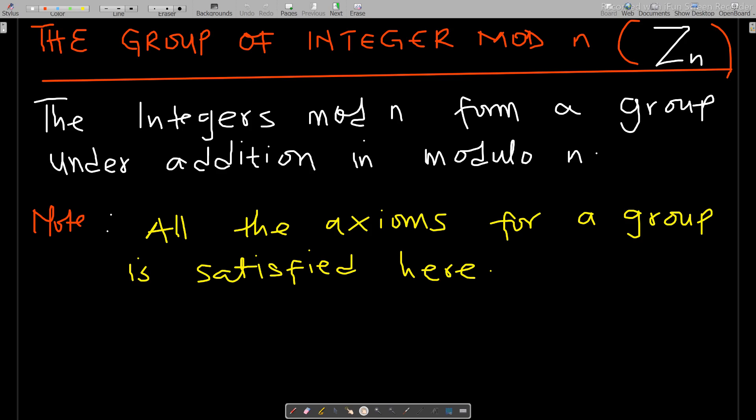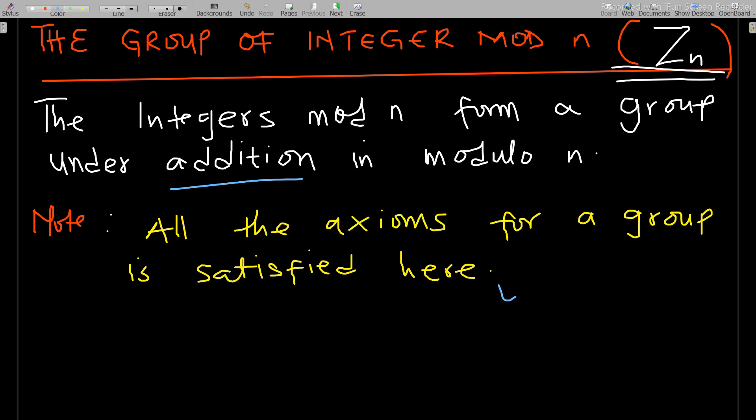The group of integers modulo n, which we call Z_n — the integers modulo n form a group under addition in modulo n. For it to be a group, we need a set with a defined operation. That operation here is addition, and this addition involves modulo arithmetic. All the axioms required for a group are satisfied here.